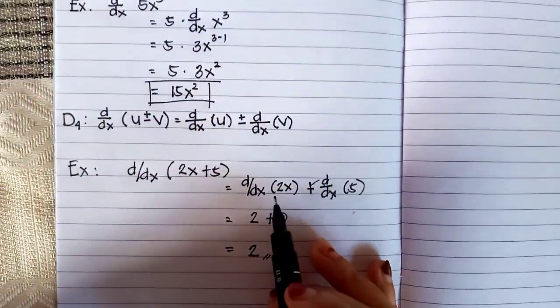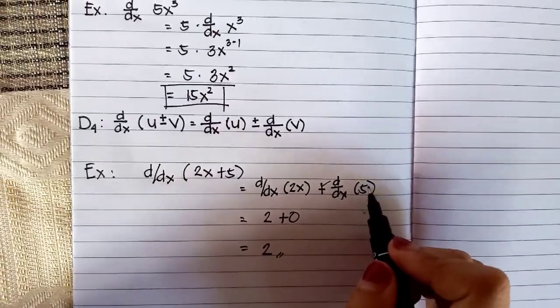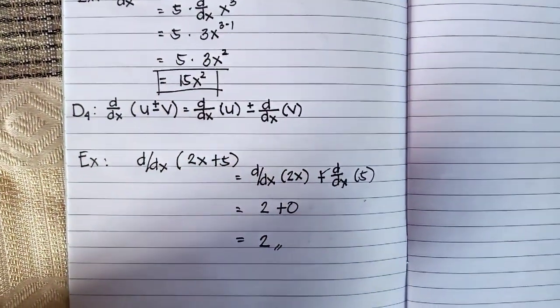Example: d/dx of 2X plus 5 equals d/dx of 2X plus d/dx of 5, where it is the combination of formula number 1 and 2.